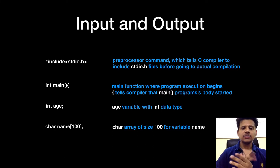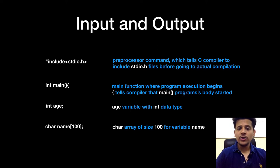So the next is character name square bracket 100. We are defining a character array of a size 100 for variable name. What is the array that we will see in upcoming slides.